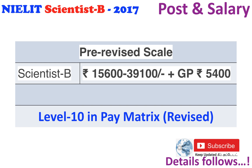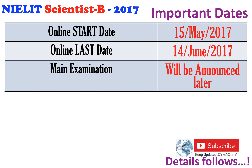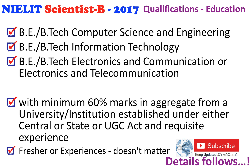The post is Scientist B and the salary is 15,600 to 39,100 with a grade pay of 5,400. This is a pre-revised scale; now it will be Level 10 in the pay matrix, which is a revised pay where you will be getting a pay higher than what is mentioned here. Online application starting date is 15th May 2017 and last date is 14th June 2017.